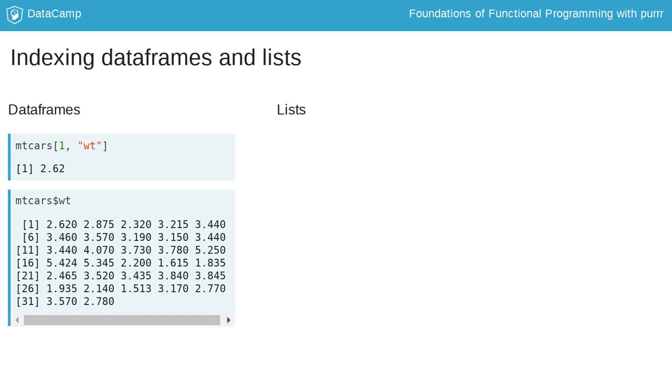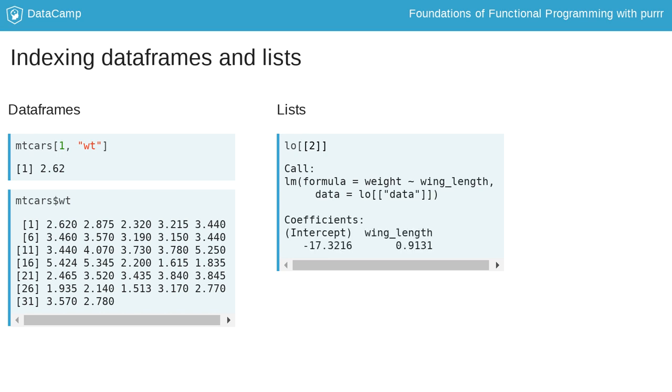List indexing is one key place where lists differ from data frames and vectors. List indexing uses square brackets just like data frames and vectors, but in a different way. First, we can use double square brackets with a number to subset any list. Here we are subsetting out the second element of the LO list.